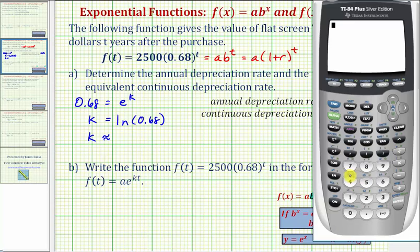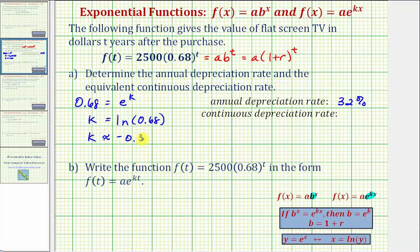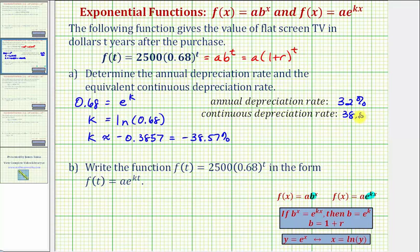We enter natural log of 0.68 and press enter. To four decimal places, k is approximately negative 0.3857. Because we have a negative value for k, we know we have exponential decay, or in this case depreciation. So the equivalent continuous depreciation rate is approximately 38.57%.